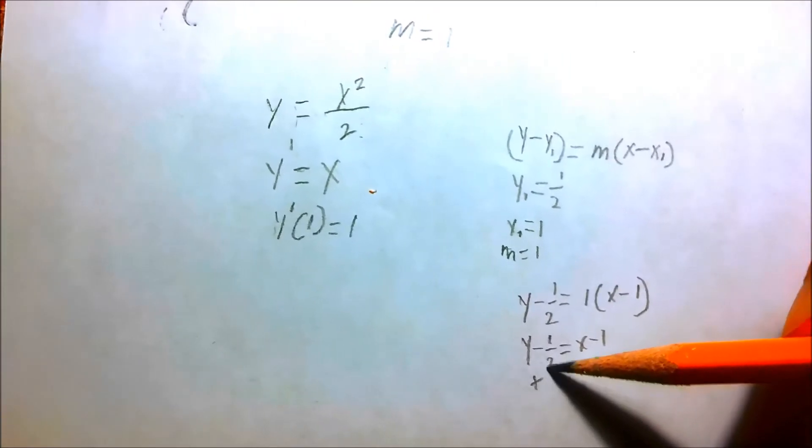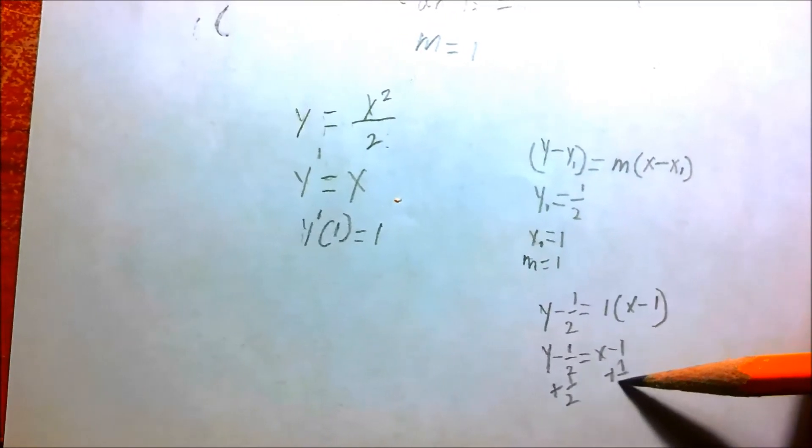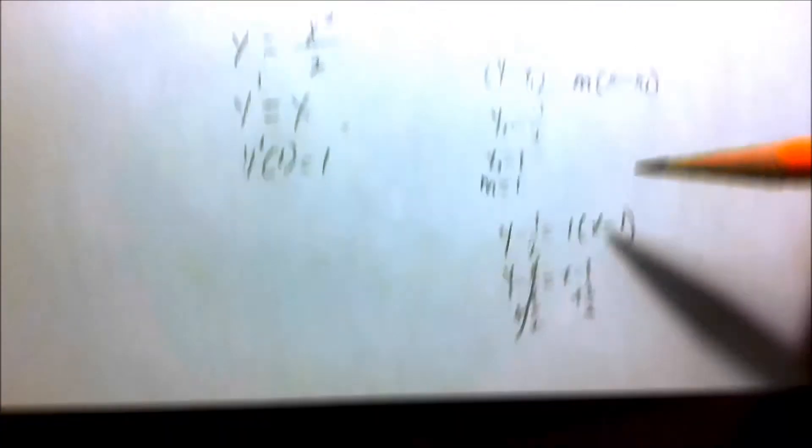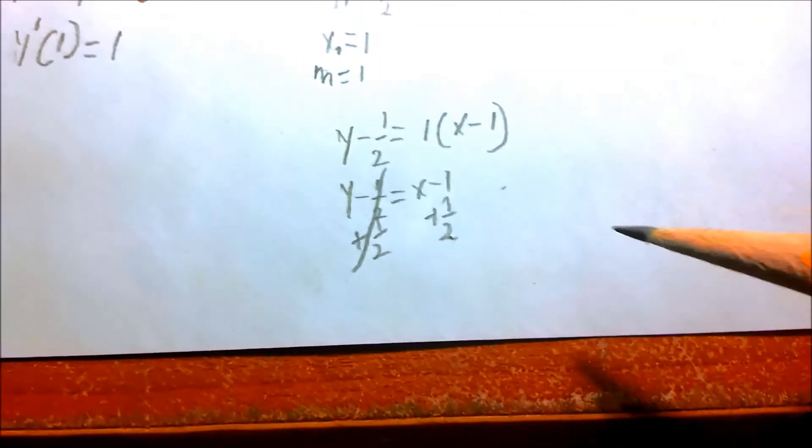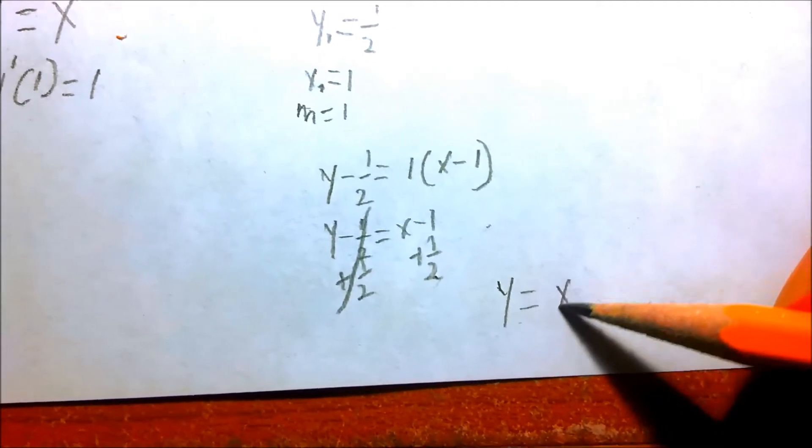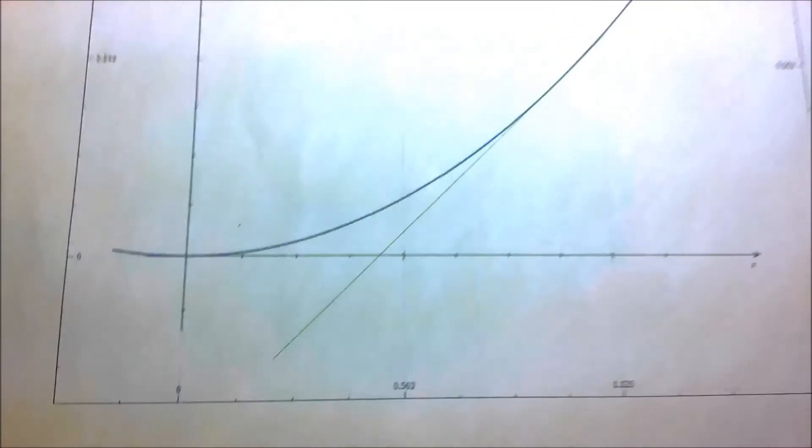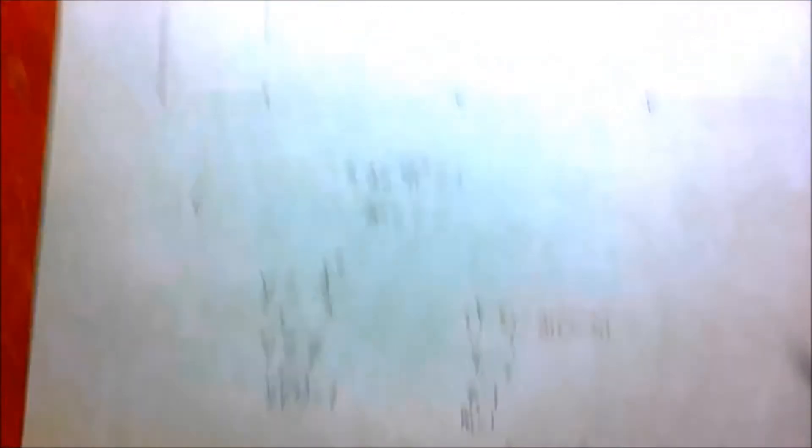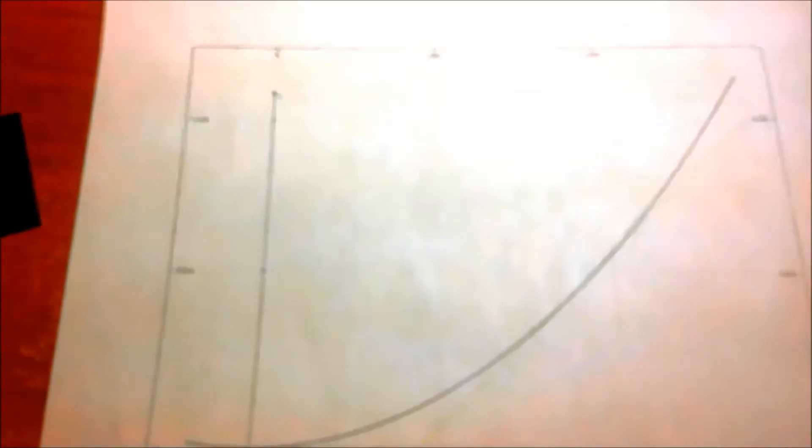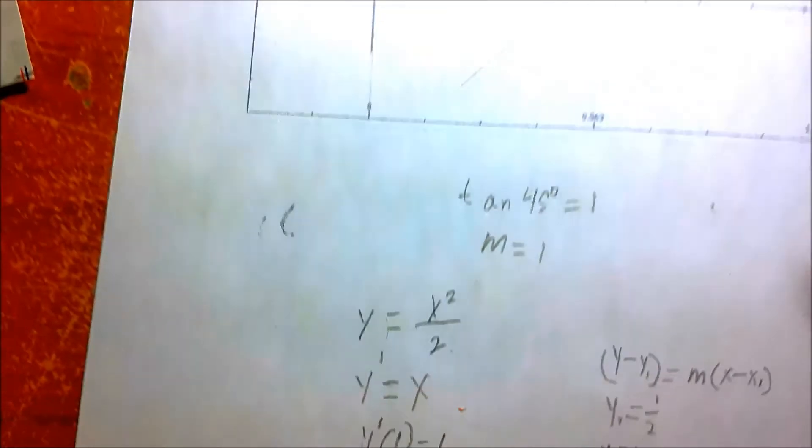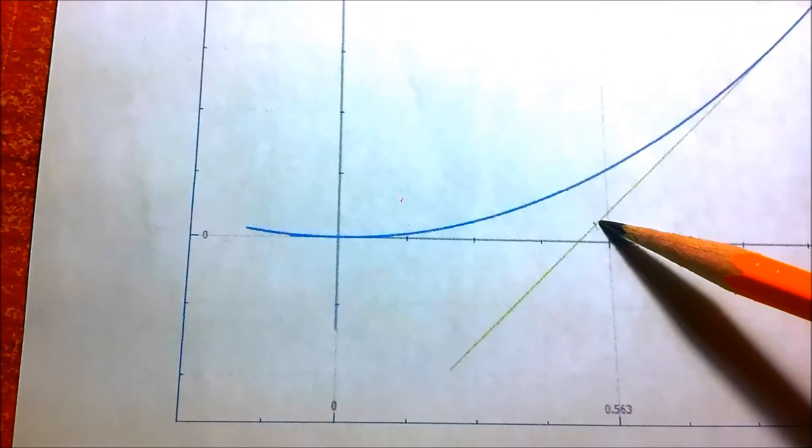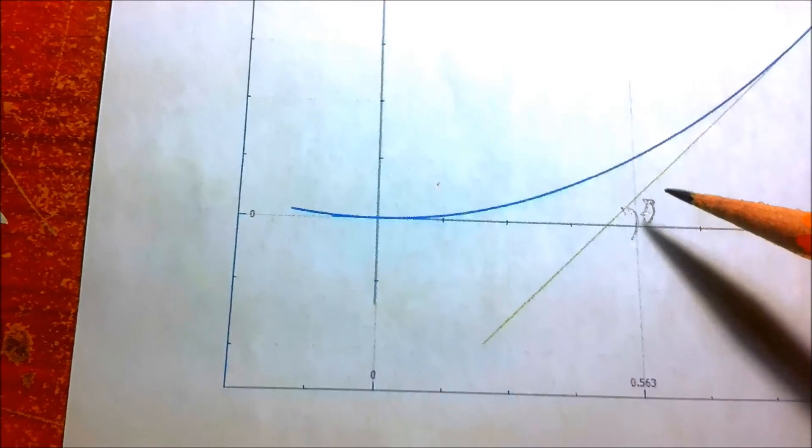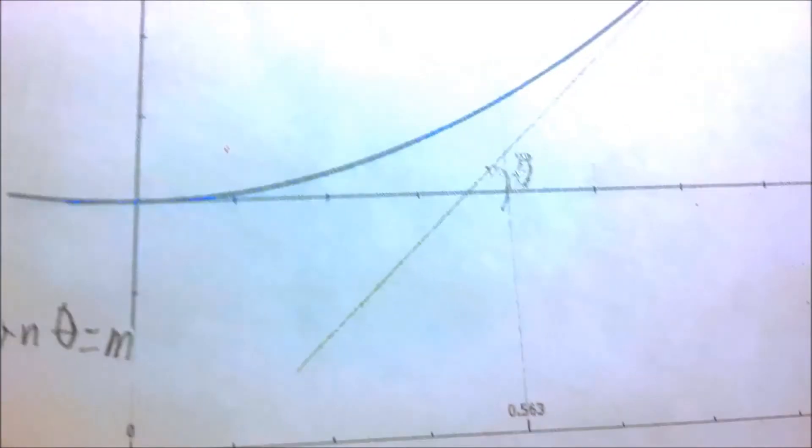So we have y minus 1 half equals 1 times x minus 1. You can distribute it, you get the same answer. It doesn't change anything. Y minus 1 half equals x minus 1. So you add 1 half to both sides. And this one cancels out. You end up with y equals x minus 1 half. And that is the equation of the tangent. I actually punched in that equation into my graphing utility to get that tangent.